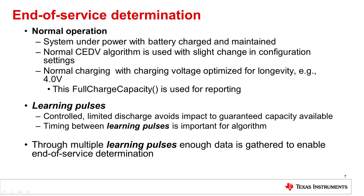During normal operation, the system will be powered with the battery plugged in, maintaining fairly a full charge. We have a CEDV gauging algorithm used in the part with some slight changes. Normally in a backup system, you may charge the battery to a voltage slightly below the maximum allowed — for example, in a lithium-ion system you may be allowed to charge at 4.2V but reduce that to 4.1 or 4.0V to give a longer life. The gauging algorithm calculates state of charge based on full charge capacity. As part of the end-of-service determination, which is a separate module from the gauging, we trigger very controlled learning pulses periodically with very limited depth, minimizing impact on the capacity available for the backup system.